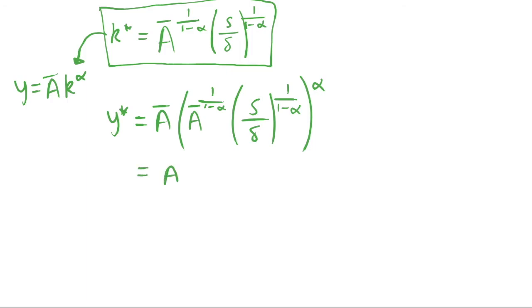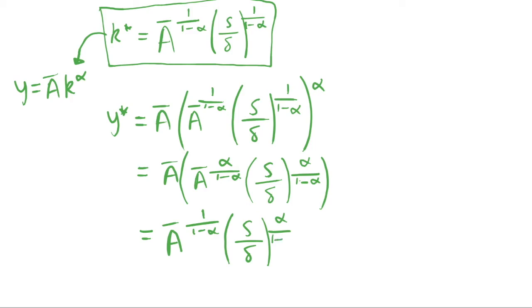So if we just work this through quickly, we have to raise everything to the power of alpha like so. And now if we just collect these A bars, the productivity parameter together, with a bit of simple rules of powers, we'll see that this is equal to this term. Basically because the power of A bar was this, and I've just made that look a bit nicer by grouping the terms together. So this is our output per capita in steady state right here.